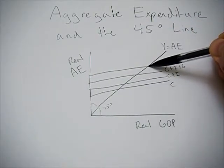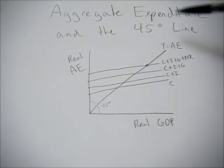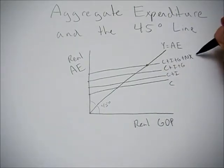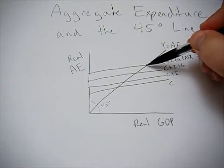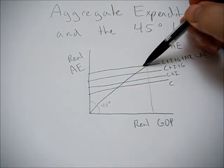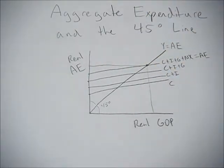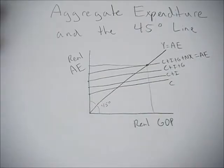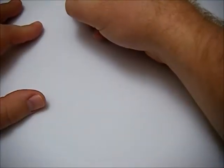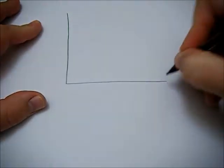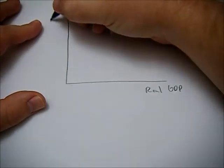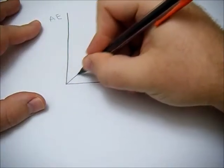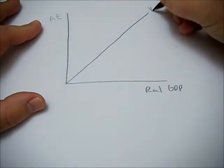Where this line crosses is the equilibrium amount, where aggregate expenditure is equal to real GDP. So if we aren't at that point in our economy, then we are not in equilibrium. Aggregate expenditure could either be higher or lower than this 45-degree line, which shows us equilibrium.